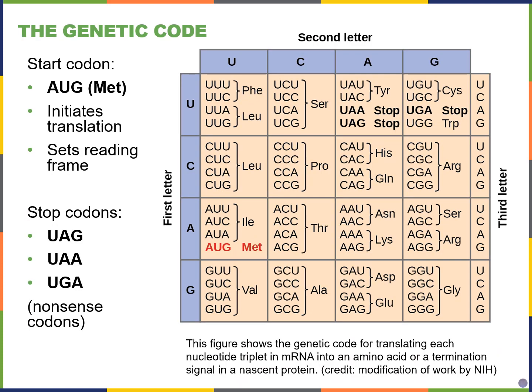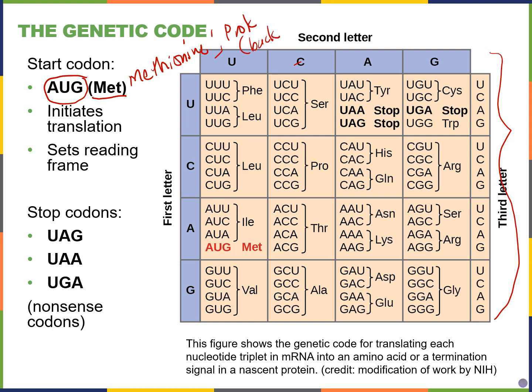You do not have to memorize the codon chart — if it's on an exam I would give it to you — except for four codons I do want you to memorize. The first is the start codon, A-U-G, which encodes the amino acid methionine. In prokaryotes like bacteria, there is a formyl group attached to the methionine, so you'll see it called f-met, or formyl methionine. The start codon is important because it initiates translation and sets the reading frame.